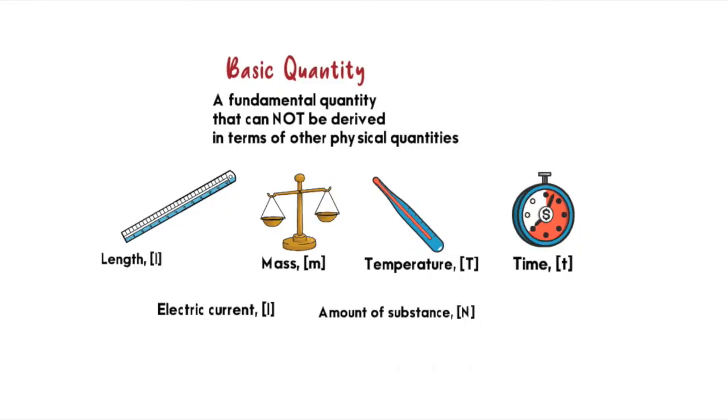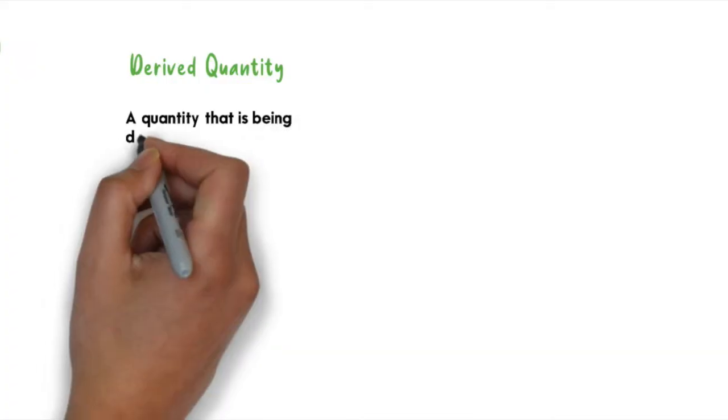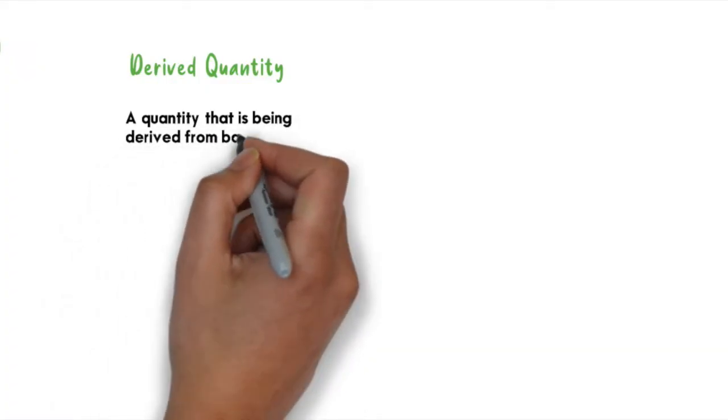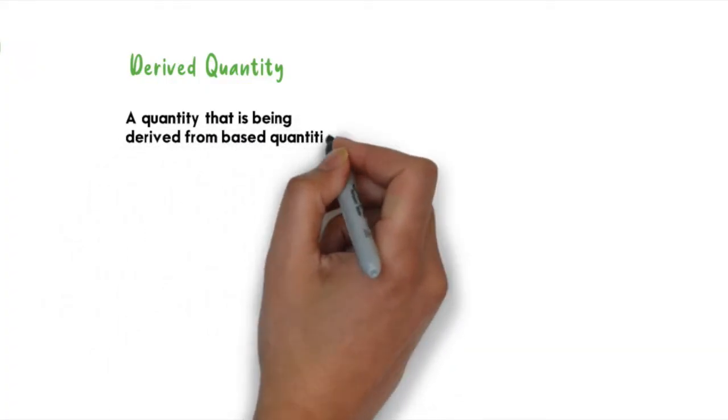All of these basic quantities are denoted in their own dimension. Next is derived quantity. What is derived quantity? It is a quantity that has been derived from base quantity that we had learned just now.